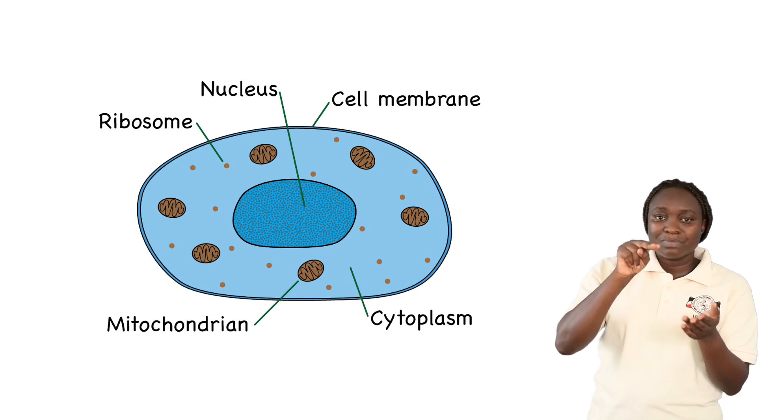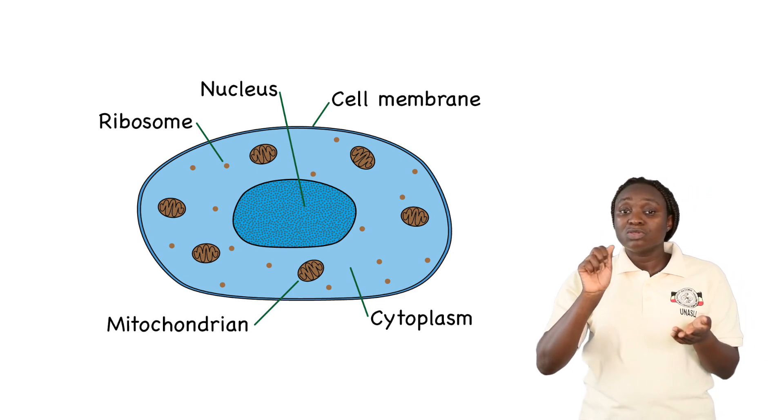In primary school you learned about the parts of an egg, and they had different names. For our lesson today, we used the egg just to show us the three layers, but the names of the parts of the egg are different. I would like you to take note of that.